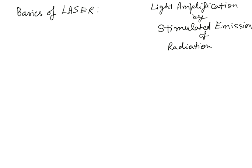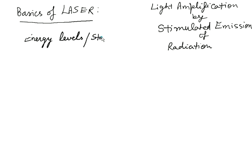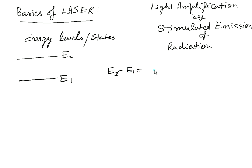In this video lecture I will discuss basics of the laser. Laser stands for Light Amplification by Stimulated Emission of Radiation. Every time we use energy levels or energy states in the chapter of laser, these two lines are just representation of the cells or orbitals in which electrons exist. This one is the lower energy level and this one is the upper energy level, so E2 minus E1 is represented by delta E.